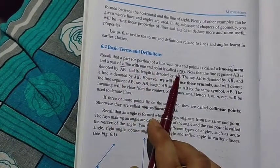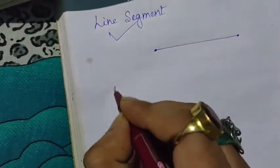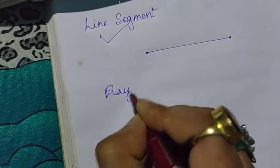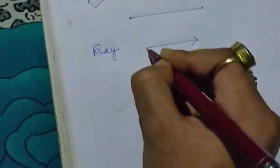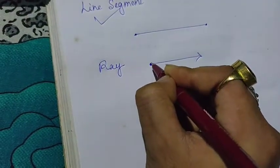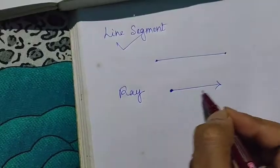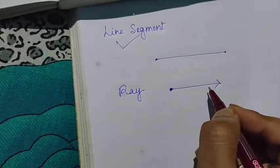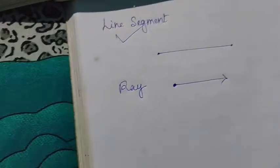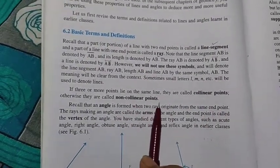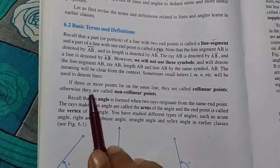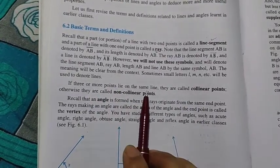A part of a line with one endpoint is called a ray. With one endpoint, you can see there is only one endpoint here, so it will be called a ray.